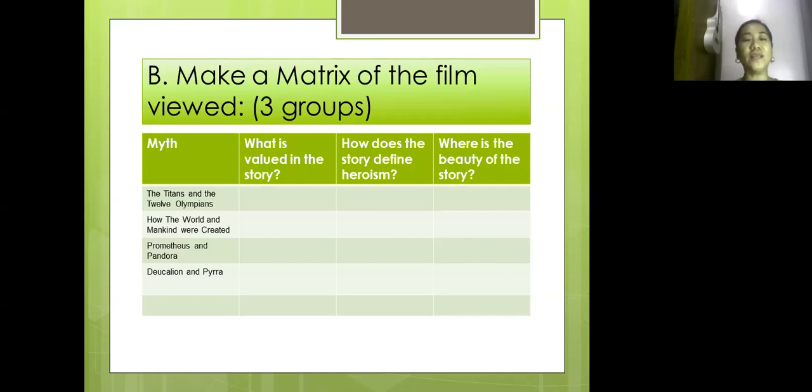First column, what is valued in the story? Then you have to briefly discuss what is valued in the story. How does the story define heroism? Briefly explain how does each story define heroism. And where is the beauty of the story? Discuss briefly where is the beauty of the story, in which part of the story is the beauty of life.